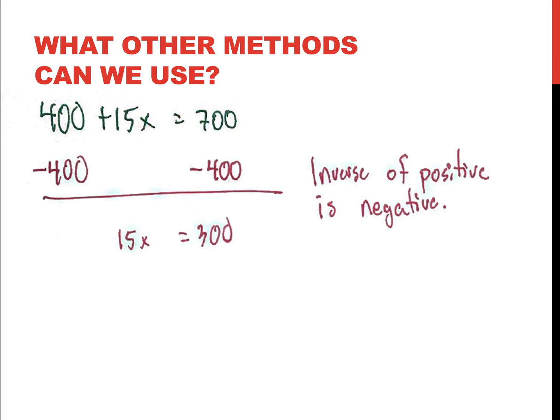So, I'm going to subtract 400 from each side. That leaves me with 15x is equal to 300. That was 400 + 15x = 700 is my equation. The inverse of a positive number is a negative number, so I subtract 400 from each side, giving me 15x = 300.